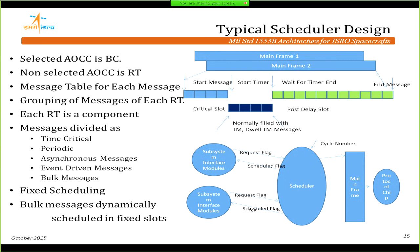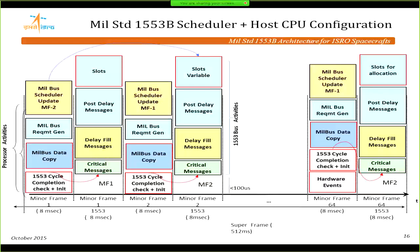We went ahead with a scheduler that fits almost all our requirements. We define a critical slot, a delay slot, and a post-delay slot. Critical slot messages go out immediately at the start of the cycle. There are provisions to include additional messages that fit into the cycle. The scheduler looks at a database, checks the cycle number and request flags from subsystems, organizes the frame, and passes it to the protocol chip.